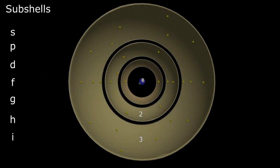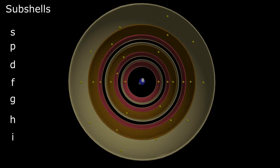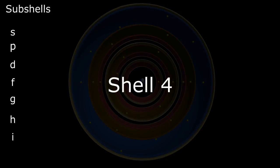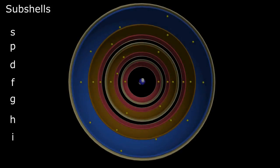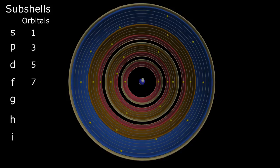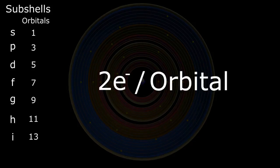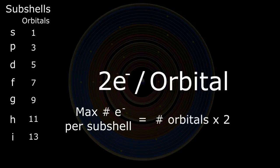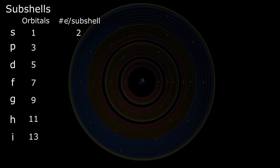For instance, shell 1 contains a single subshell S; shell 2 contains two subshells, S and P; shell 3: S, P, and D; shell 4: S, P, D, and F; shell 5: S, P, D, F, and G, etc. Furthermore, each subshell contains a fixed odd number of orbitals beginning with 1 in S, 3 in P, 5 in D, 7 in F, 9 in G, 11 in H, and 13 in I. Finally, each orbital can contain a maximum of two electrons, and therefore the maximum number of electrons in each subshell is determined by multiplying the number of orbitals times 2, giving 2 electrons in S, 6 in P, 10 in D, and 14 in F.